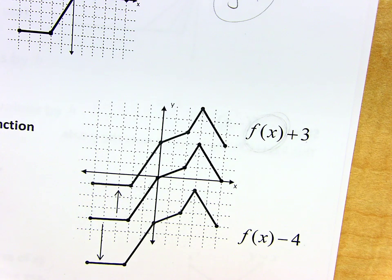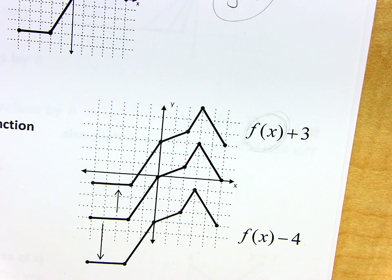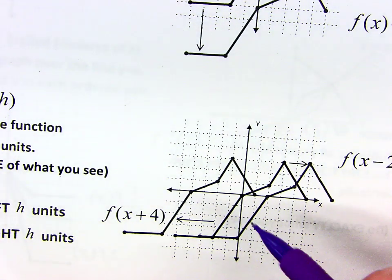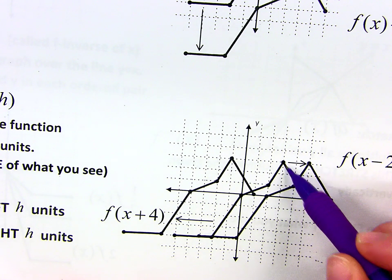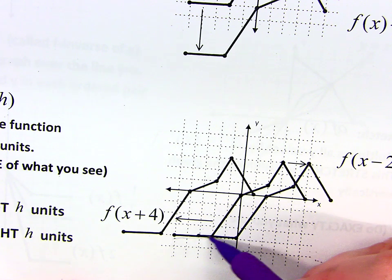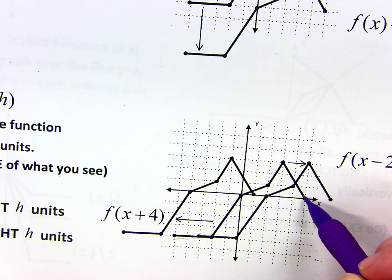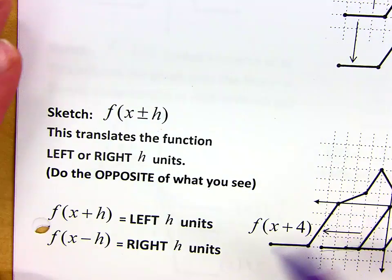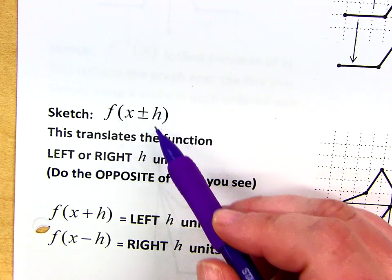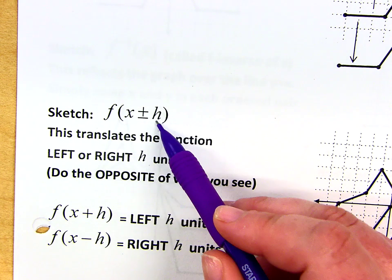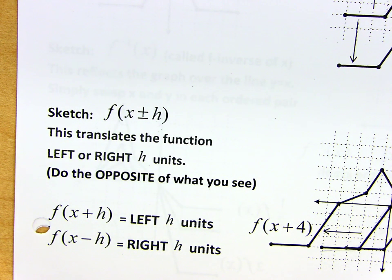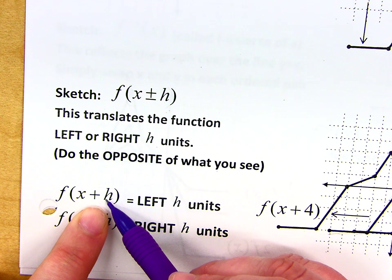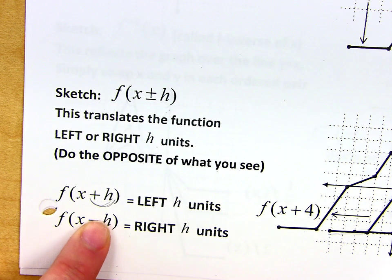There are a lot of other things I can do to my graph besides moving it up or down. I can move it left or right. When you want to move it left or right, you're doing that inside of the function. You're going to move your graph left or right h units. But here's the difference: if I see x plus h inside the function, I'm actually going to move this many units to the left. It's the opposite of what you see. Same thing if I want to move it to the right — you'll see a minus h in there, but that really means go positive h units to the right.